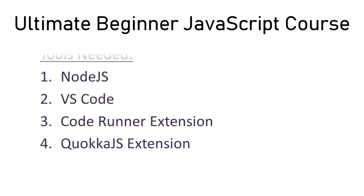First we have Node.js, then we have Visual Studio Code, then we have an extension, then we have a Code Runner extension, then we have a QoA.js extension. The QoA.js extension provides output of the code. This is the extension we have to install to set up the code environment.